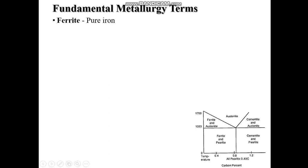Ferrite means the pure form of iron. The solid solution of carbon in alpha iron is called ferrite. Carbon atoms are dissolved interstitially in the BCC structure of alpha iron, but to a much lesser extent compared to the FCC structure of gamma iron. The solubility of carbon in alpha iron decreases with temperature to about 0.008% at 0 degree Celsius, and the maximum solubility is 0.025% at 723 degree Celsius. It is very soft and highly magnetic, and it is the surface structure that appears in the iron carbon equilibrium diagram.